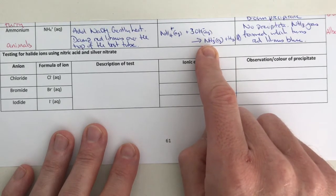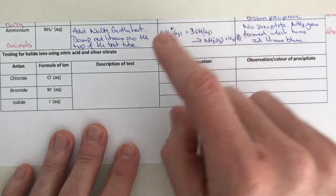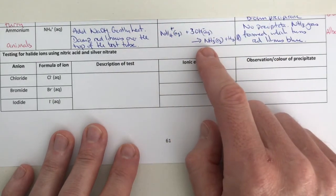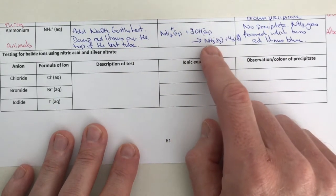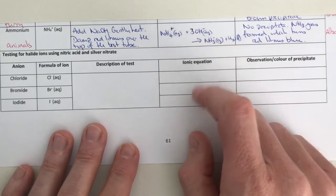It will make it go blue. So you would put a little piece of damp litmus into the test tube and that would then go blue as the ammonia came into contact with it, because the ammonia behaves as a base.